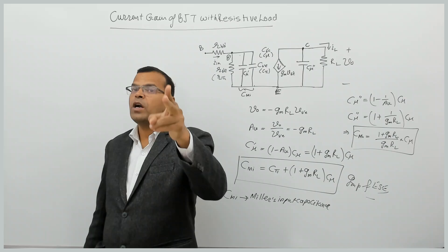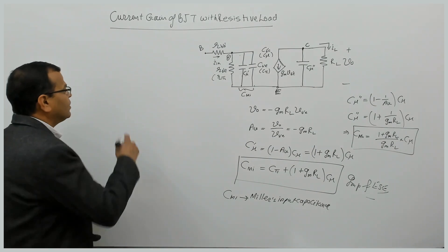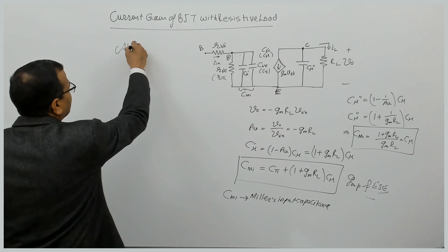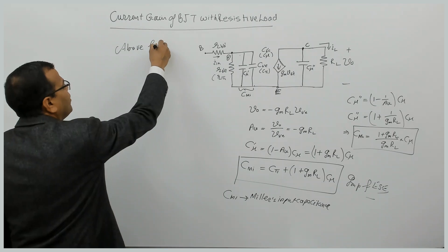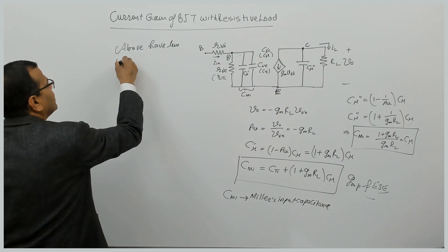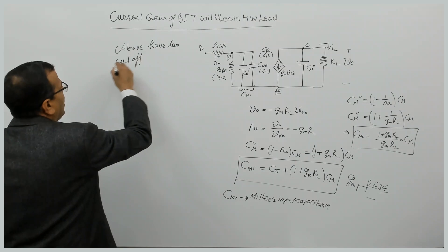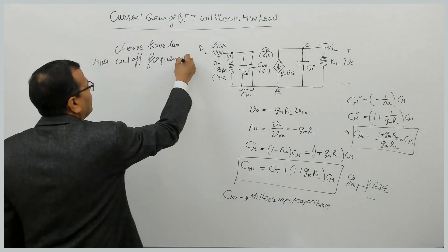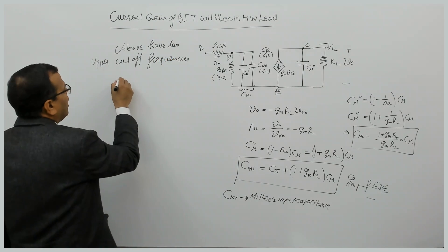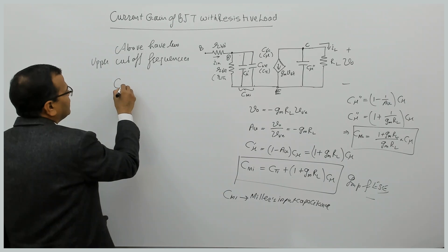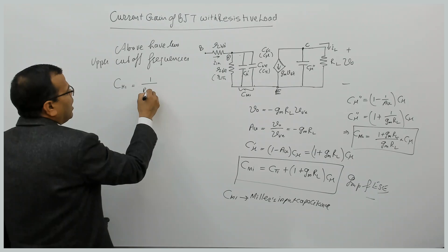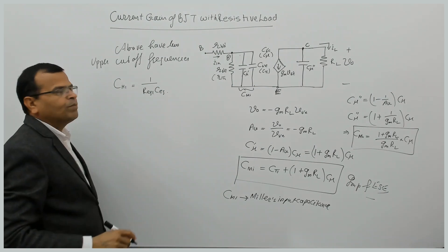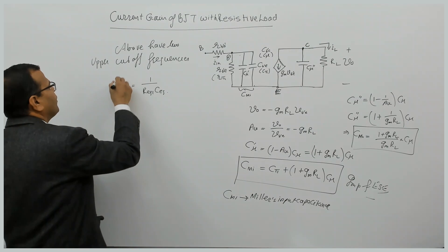That means there will be two cutoff frequencies for this circuit — two upper cutoff frequencies. The first upper cutoff frequency FH1 equals 1 divided by (2π times R_equivalent-input times C_equivalent-input). This is the cutoff frequency for the input side.